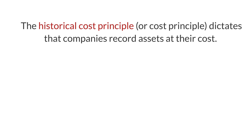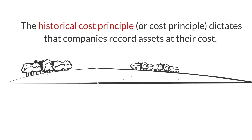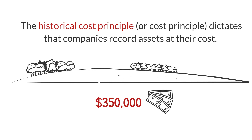For example, if a company purchases land for $350,000, it records the land at $350,000. If the land increases in value to $400,000, under the historical cost principle, it continues to report the land at $350,000.